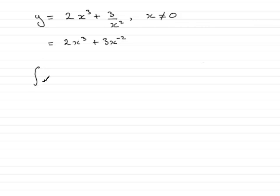So let's just write down that we've got to integrate y with respect to x. So what that's going to be is the integral of 2x cubed plus 3x to the minus 2 integrated with respect to x.